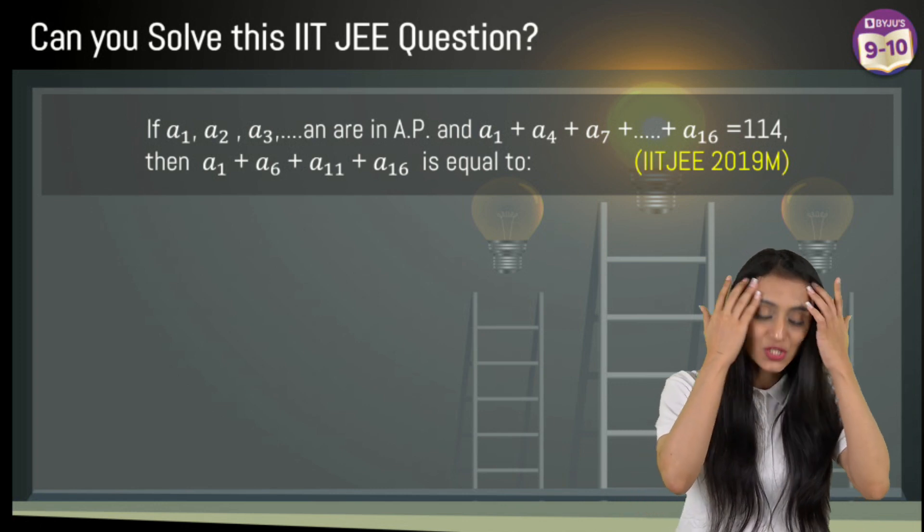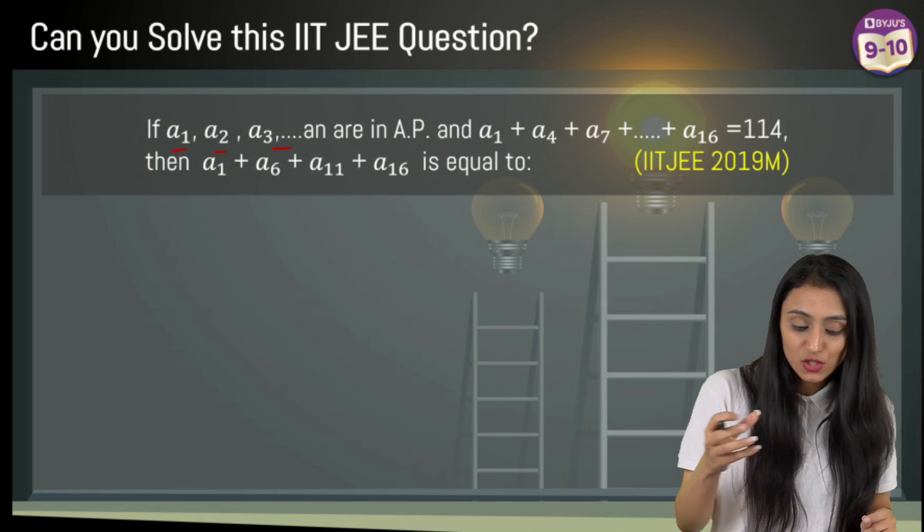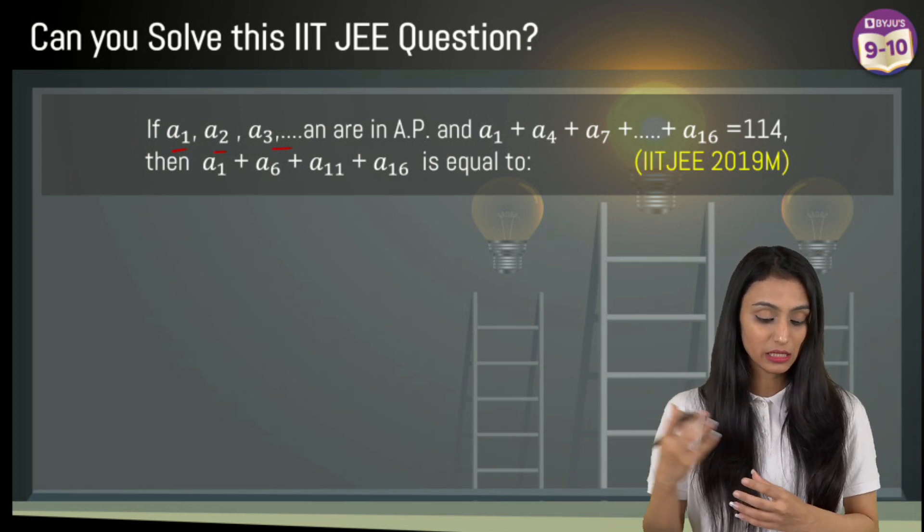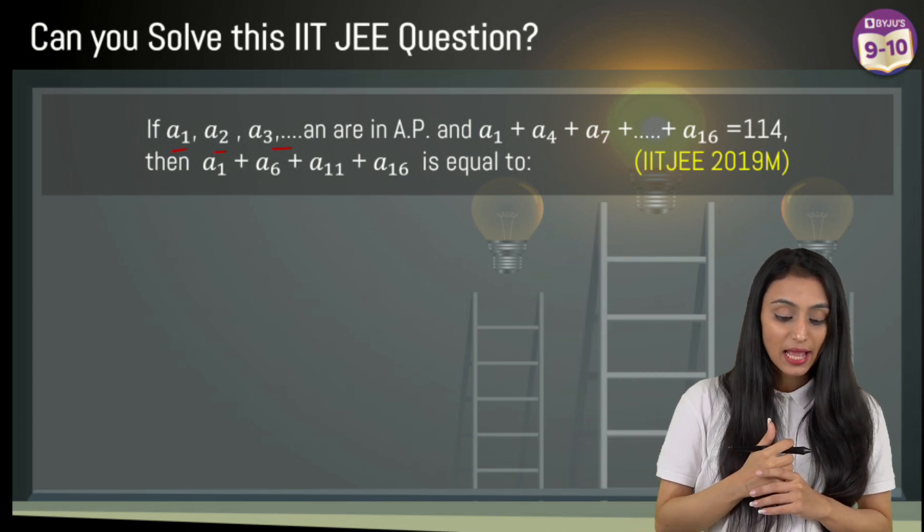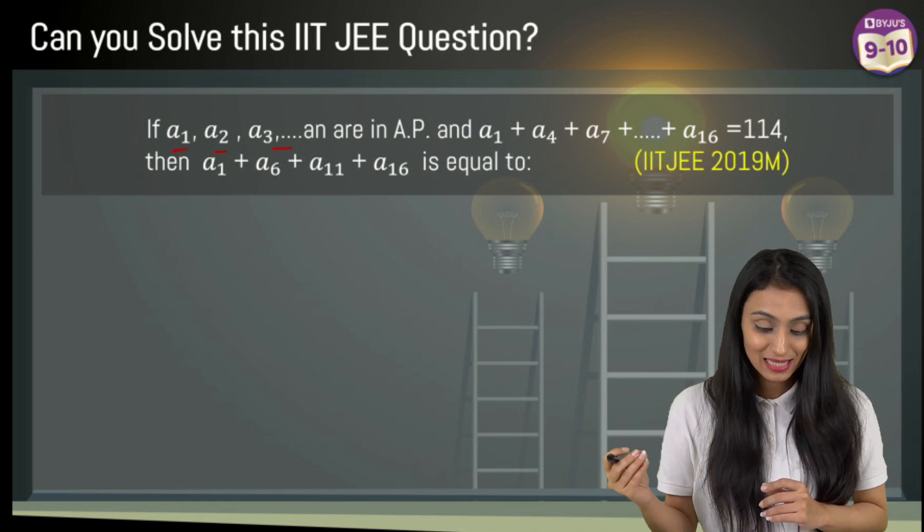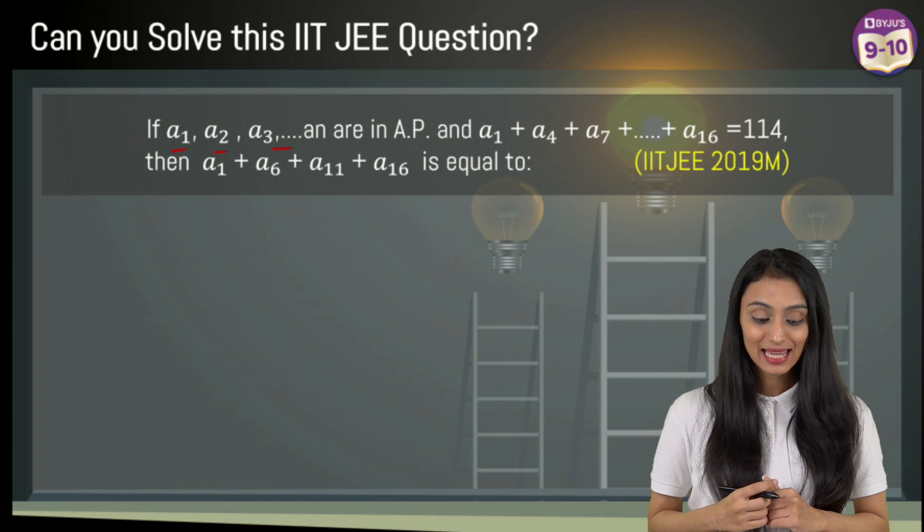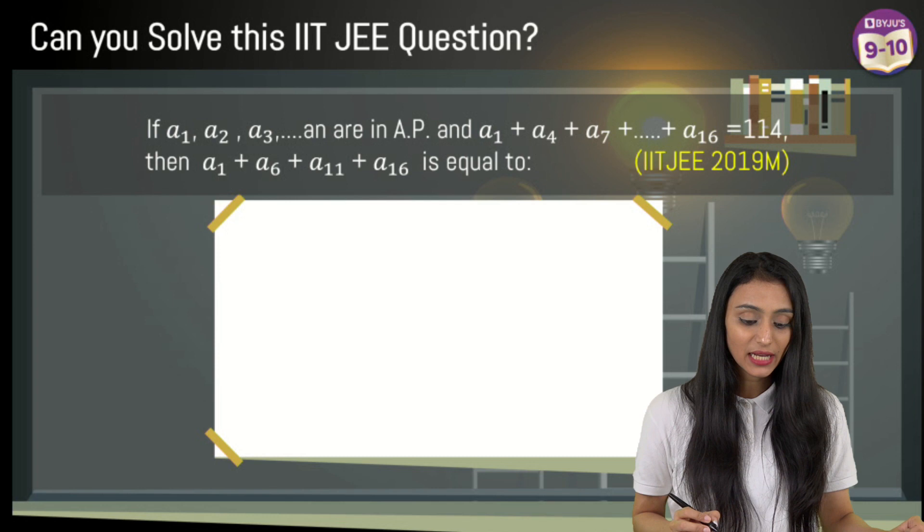Let's see what the question is. If a₁, a₂, a₃, and so on are in AP (arithmetic progression), and out of this, a₁ + a₄ + a₇ + ... + a₁₆ = 114, then a₁ + a₆ + a₁₁ + a₁₆ is equal to what?